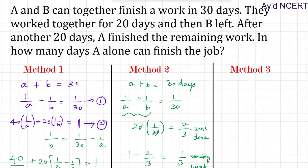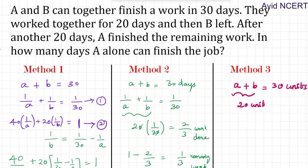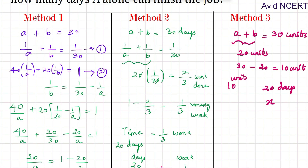The third method is much easier. A and B can together finish the work in 30 days. Instead of using days, I am taking this as 30 units of work. They worked together for 20 days, so they have already done 20 units of work. Out of 30 units, 20 units are already done, so only 10 units of work remain, which A can finish in 20 days.